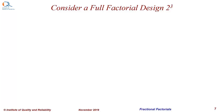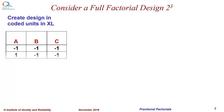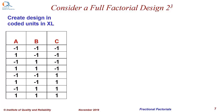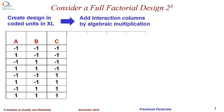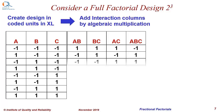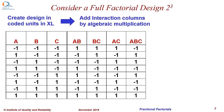Consider a full factorial design with three factors and each factor being at two levels. We can call this 2 raised to 3 or 2 to the power 3 design with eight total runs. Create a design in Microsoft Excel in coded units. Also add columns of interactions AB, BC, AC, and ABC by algebraic multiplication of the signs in columns A, B, and C.